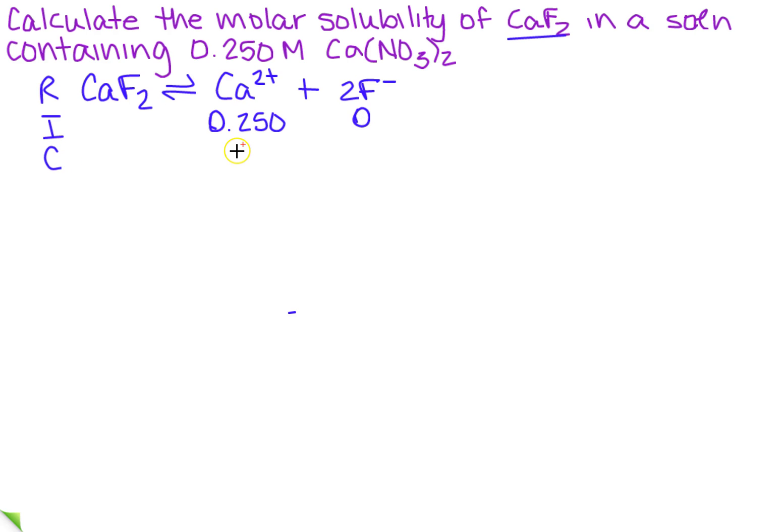The change is what? Well, this is plus S. Now I've got a 2 in front of this one, so this will be plus 2S. So at equilibrium, I'm going to have 0.250 plus S, and then plus 2S.